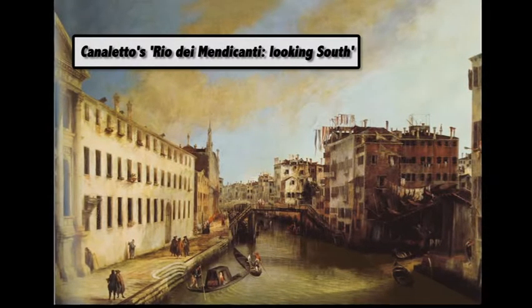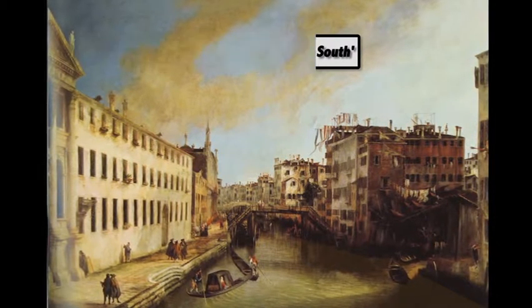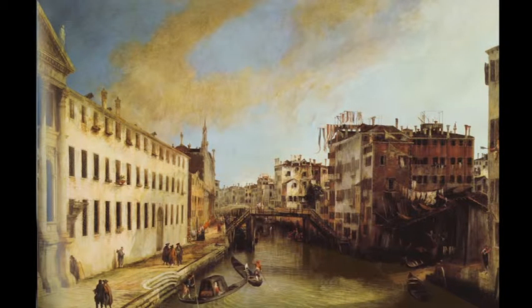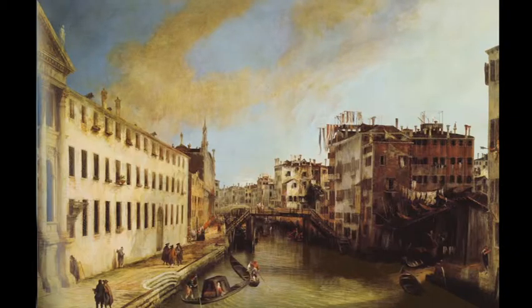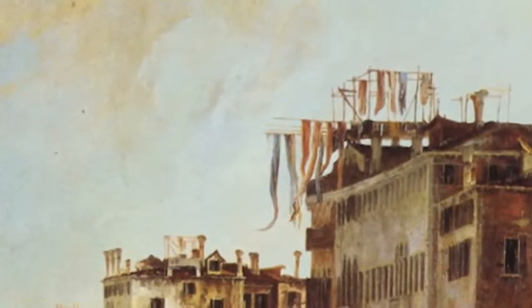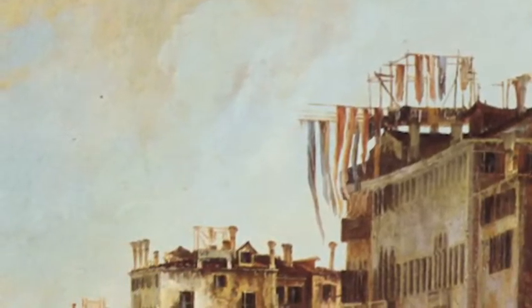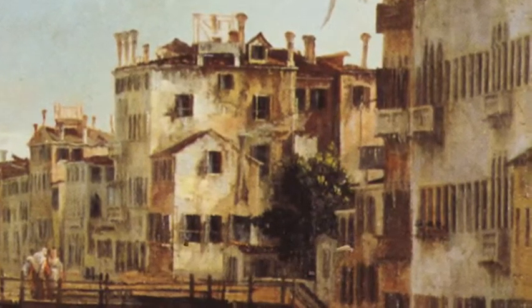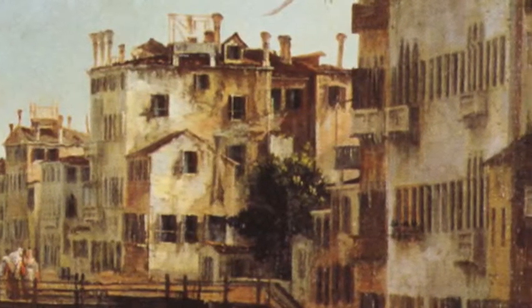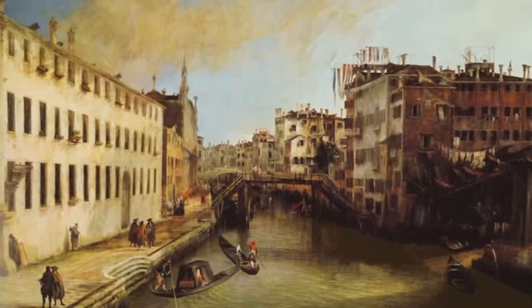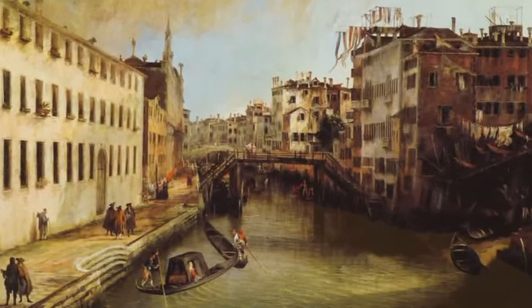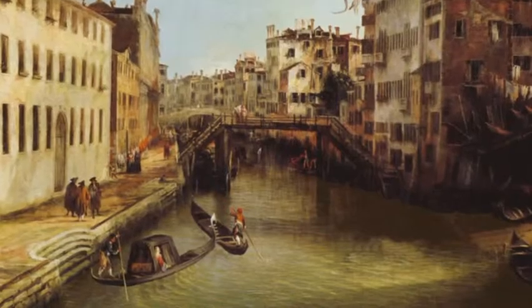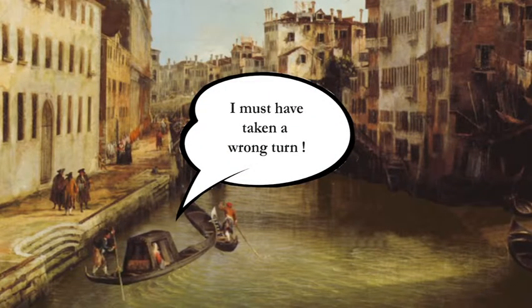This is a painting called Rio de Minticante, which is Beggar's Canal. It has some similarities in its rhythm and in its use of line and perspective, but it's much more dramatic in terms of the light and dark. You can see things like laundry hanging on the line, and disintegration of the stucco on the building. You're seeing, in a sense, the backside of Venice — not a view a tourist would be comfortable with, because it's the real Venice, the behind-the-scenes of the theater that was Venice.